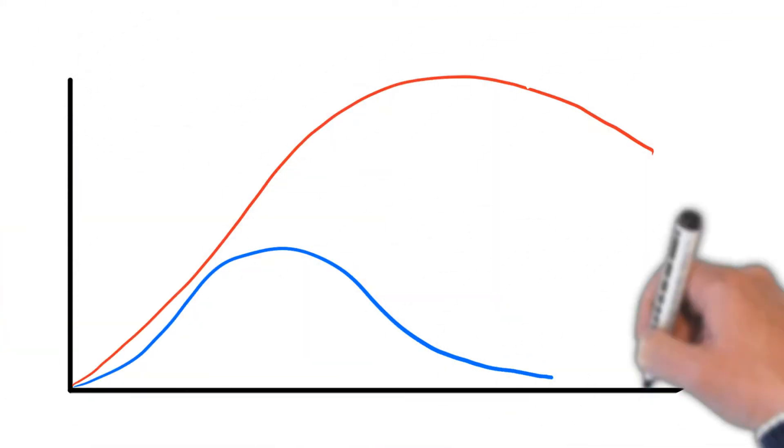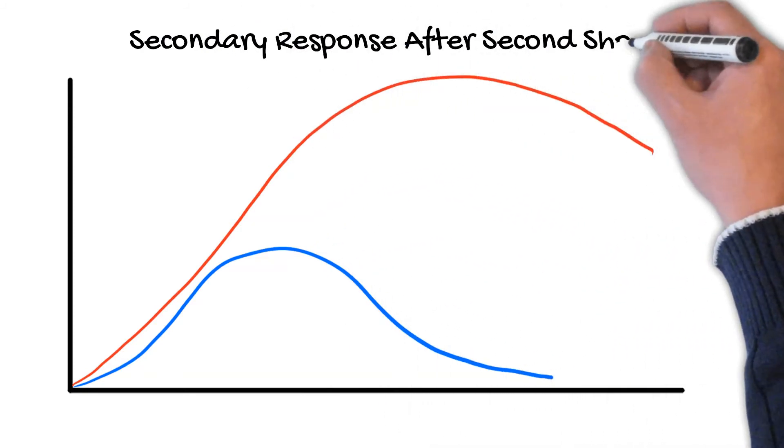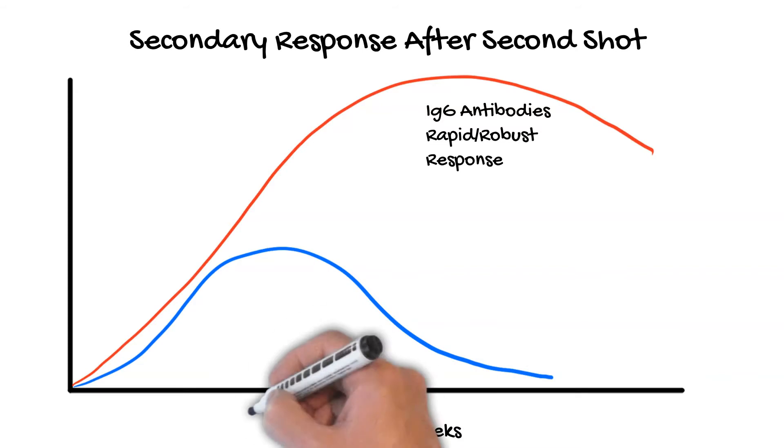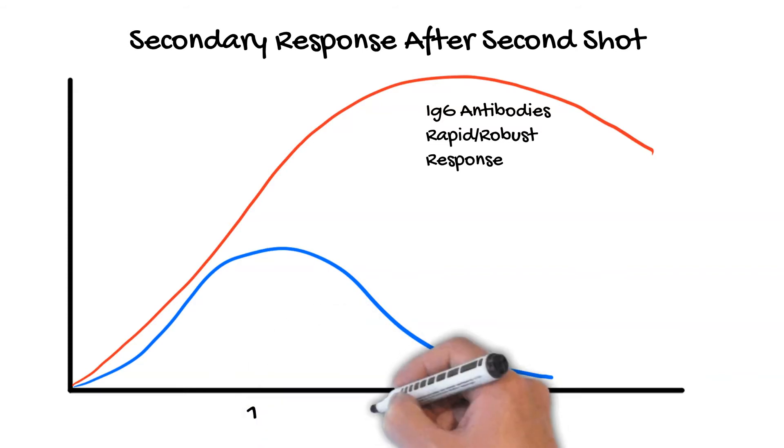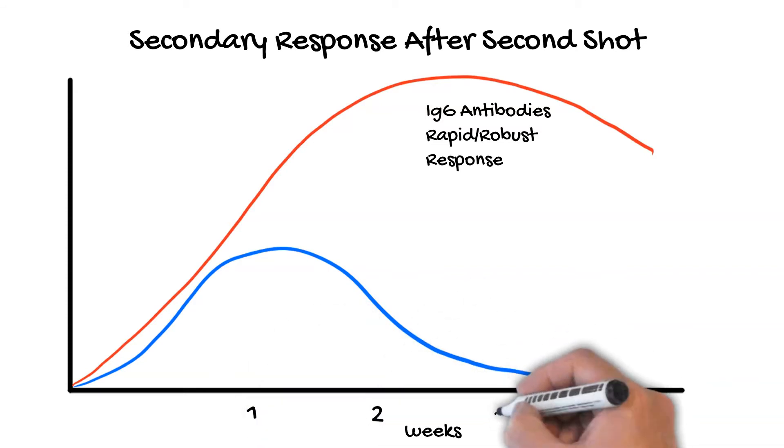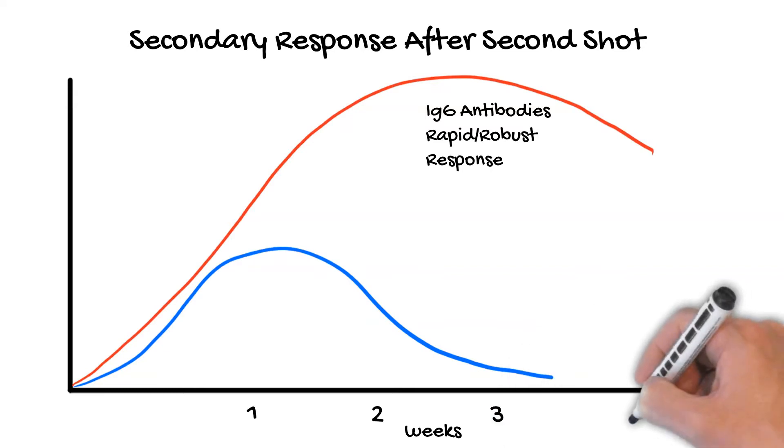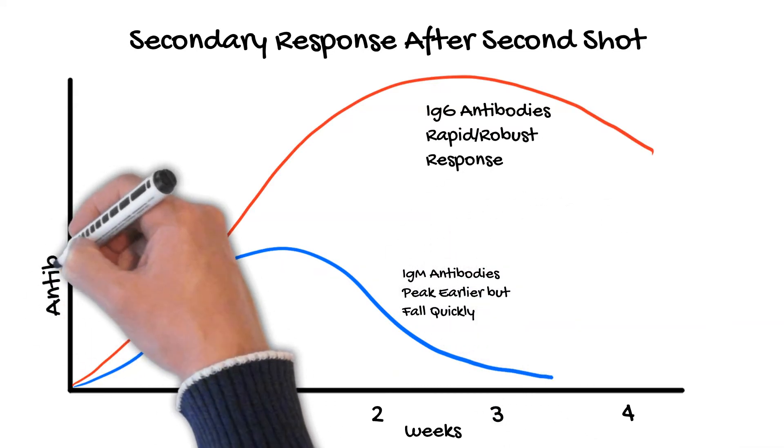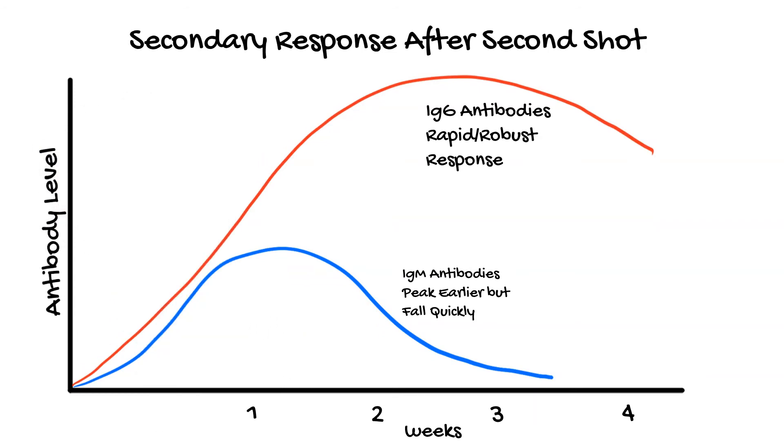Remember those T memory cells and the B memory cells that we talked about in the immune videos? Well, when the immune system is exposed to a foreign invader a second time, the T memory cells and the B memory cells consult their notes. They check their notes. And they realize, we've seen this invader before. And having received that priming dose from the vaccine, the response to the second exposure from the immune system is rapid and robust.